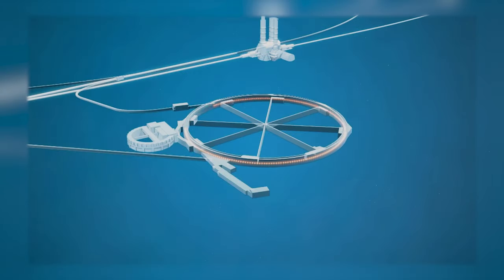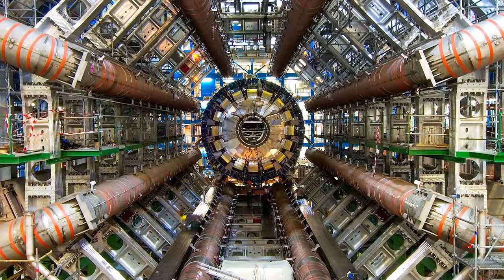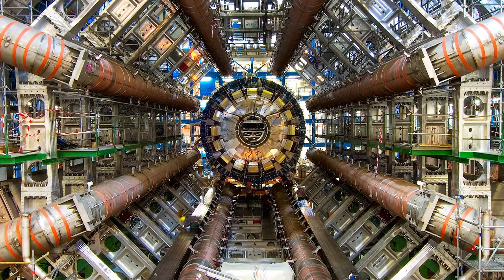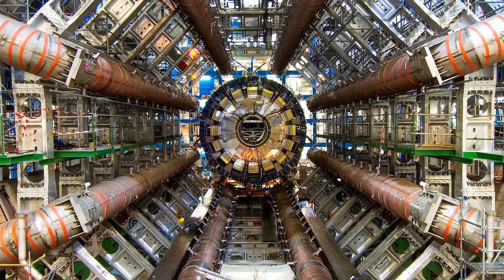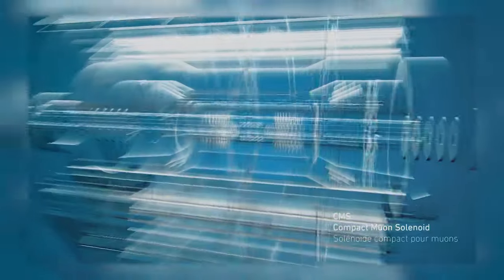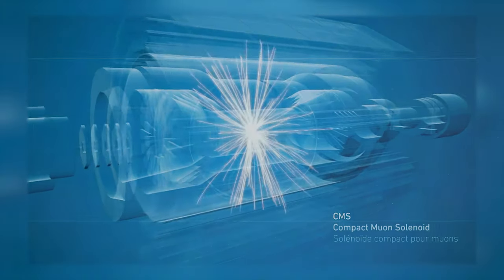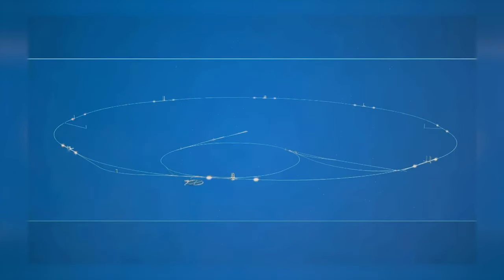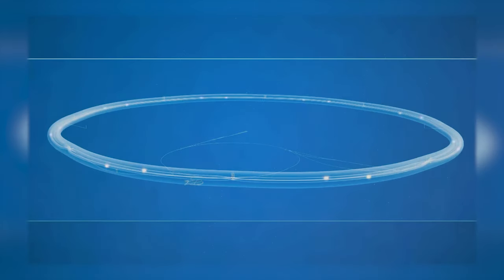Because the particles travel in a circle, circular accelerators take less room and create many more opportunities for particles to collide with each other. Particles collide with each other or with a target in a device called a particle detector, which helps measure the particle's speed, mass, and charge.